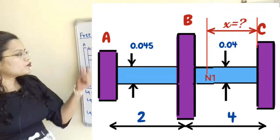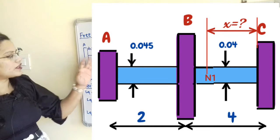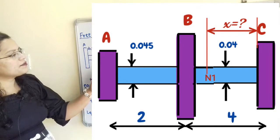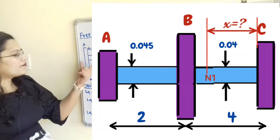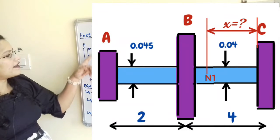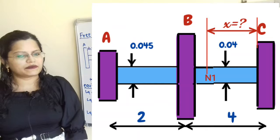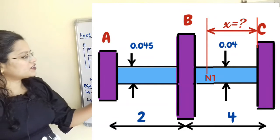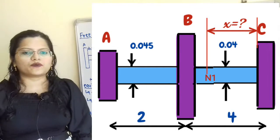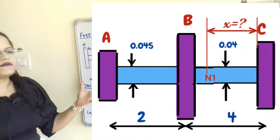There are two sections of the shaft. The first section is between rotor A and B, and the second section is between B and C. For the first section, length L1 is 2 meter and diameter D1 is 0.045 meter. For the second section, length L2 is 4 meter and diameter D2 is 0.04 meter. Take G equal to 84 × 10⁹ newton per meter square.